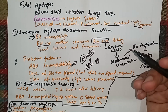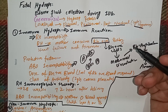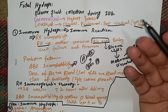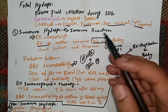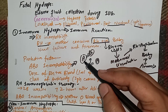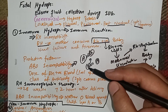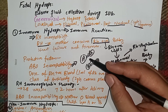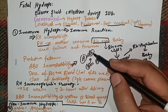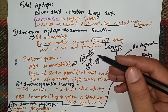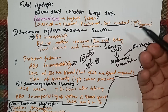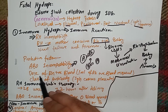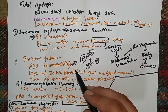ABO incompatibility somehow protects against RH incompatibility and prevents fetal hydrops in some cases. If the mother has blood group A and the baby has blood group B, the B cells that diffuse into maternal circulation are destroyed by the mother's anti-B antibodies, so RH sensitization does not occur. Another protective factor is the dose of RH-positive blood entering the mother.